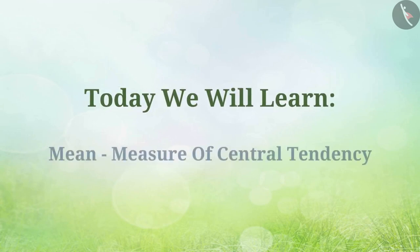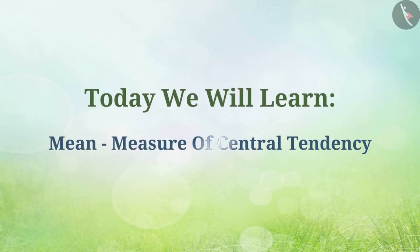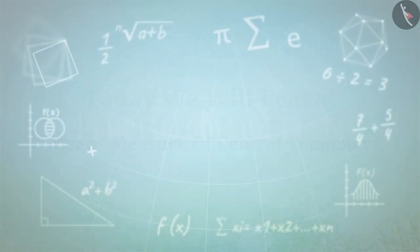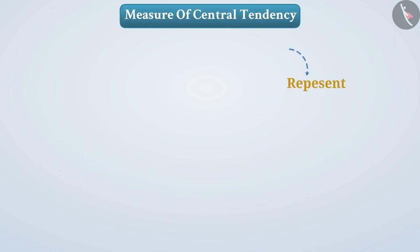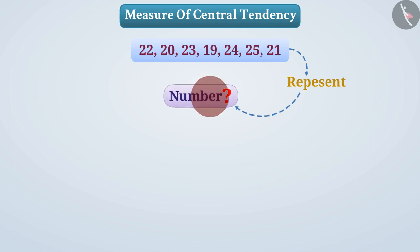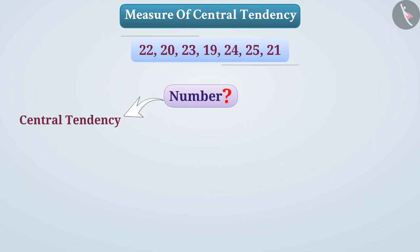Today we will learn about mean, measure of central tendency. To represent a group of numbers, many times we need an appropriate number that represents a group of observations. Such a number is called the central tendency of the group.